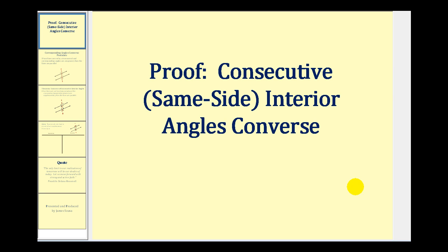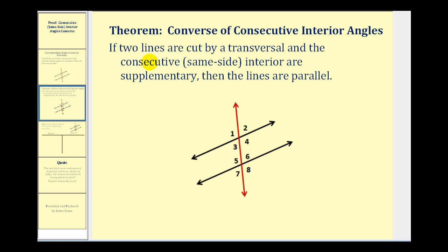Welcome to a proof of the consecutive interior angles converse, sometimes called the same side interior angles converse. This theorem states that if two lines are cut by a transversal and the consecutive interior angles are supplementary, then the lines are parallel.